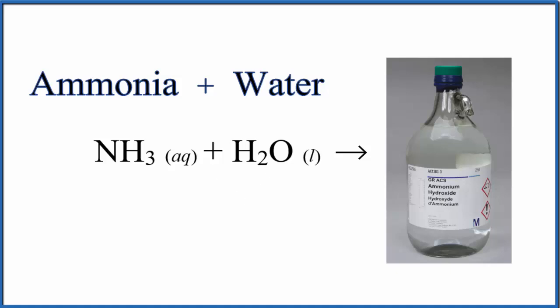First, let's just look at the overall reaction. We have ammonia, we add water, and we end up with ammonium hydroxide. It's this clear liquid here. The formula for ammonium hydroxide is NH4OH.